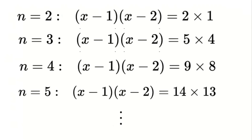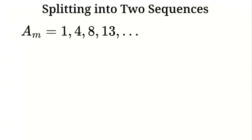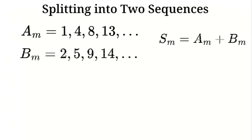From the products, we can identify two sequences: Sequence A equals 1, 4, 8, 13, and so on; and Sequence B equals 2, 5, 9, 14, and so on. Let's analyze these sequences to find a general formula.